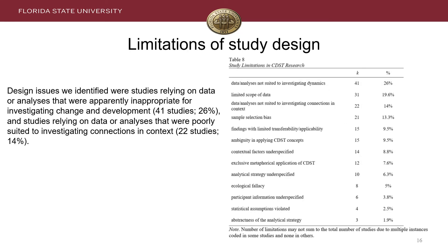Our third and final aim relates to methodological rigor and what areas were apparent for improving research quality going forward. Some of the most prevalent design issues we identified were related to data or analyses that were seemingly inappropriate for investigating change and development, or studies relying on data and analyses poorly suited to studying connections in context. For example, it's not hard to appreciate why studies drawing on a single round of interviews or cross-sectional test data at one or two time points would struggle to shed light on complex connections in context or dynamic change.